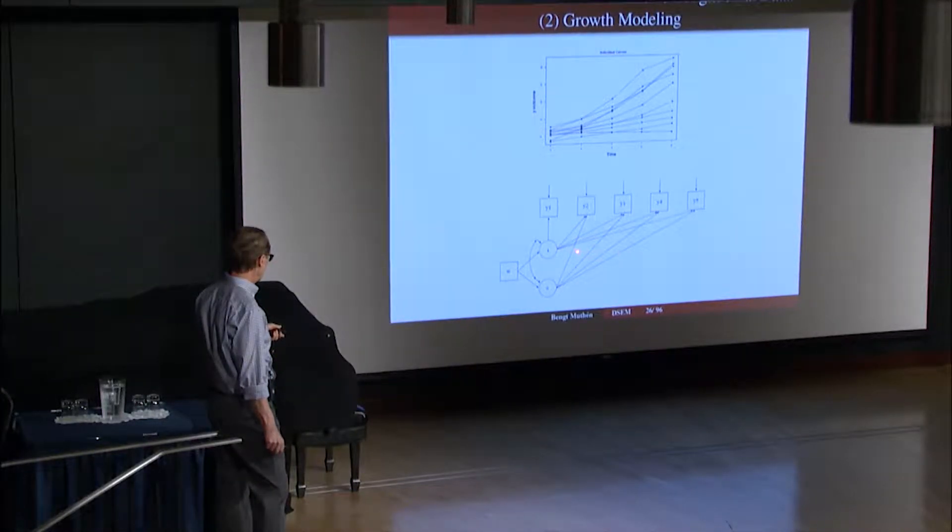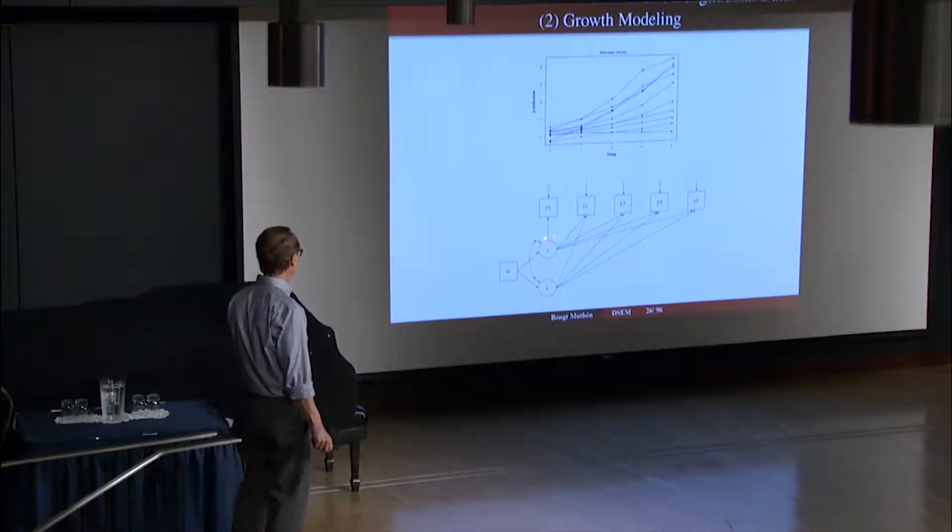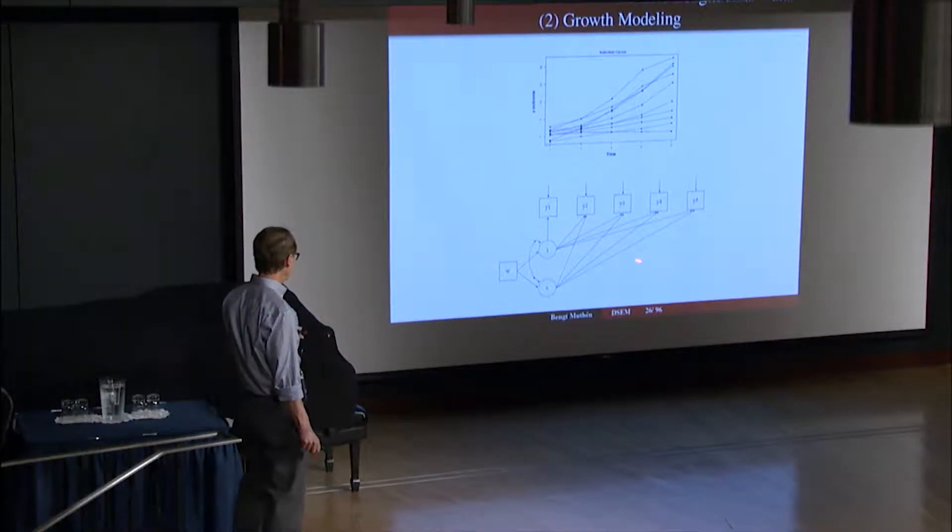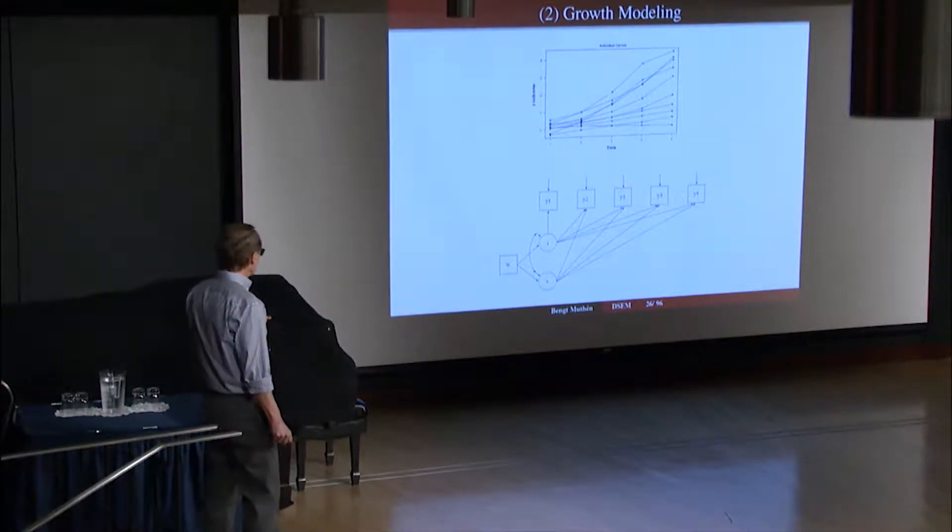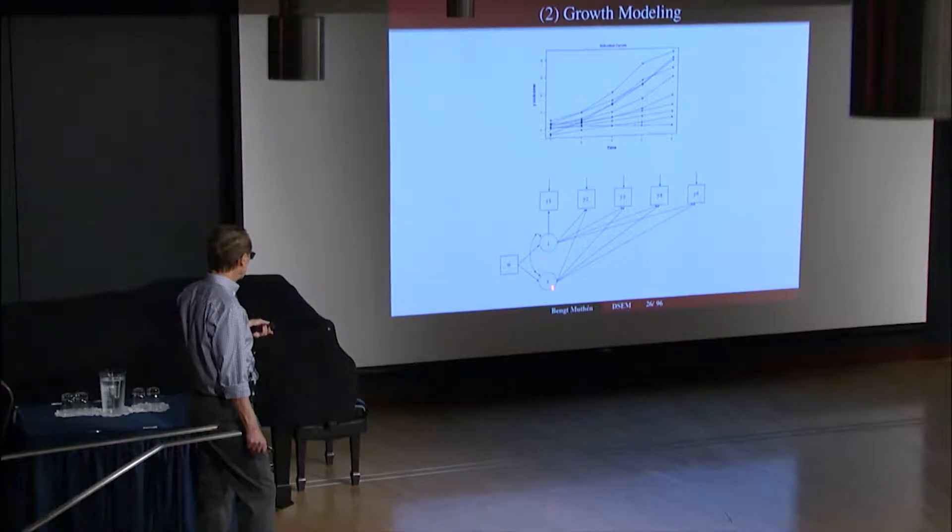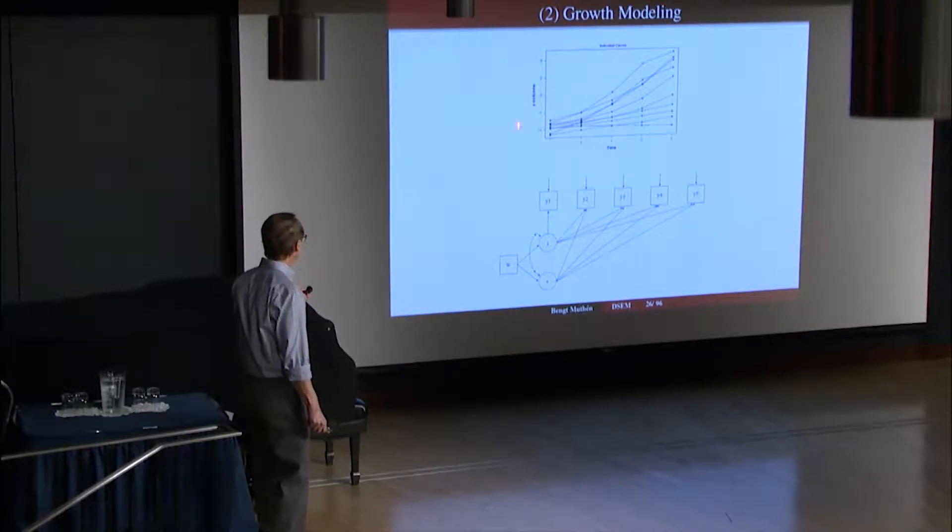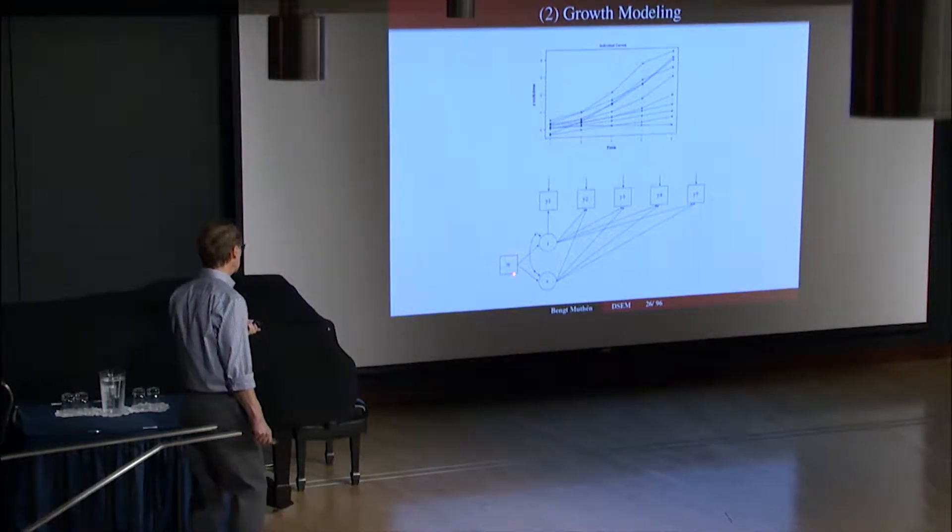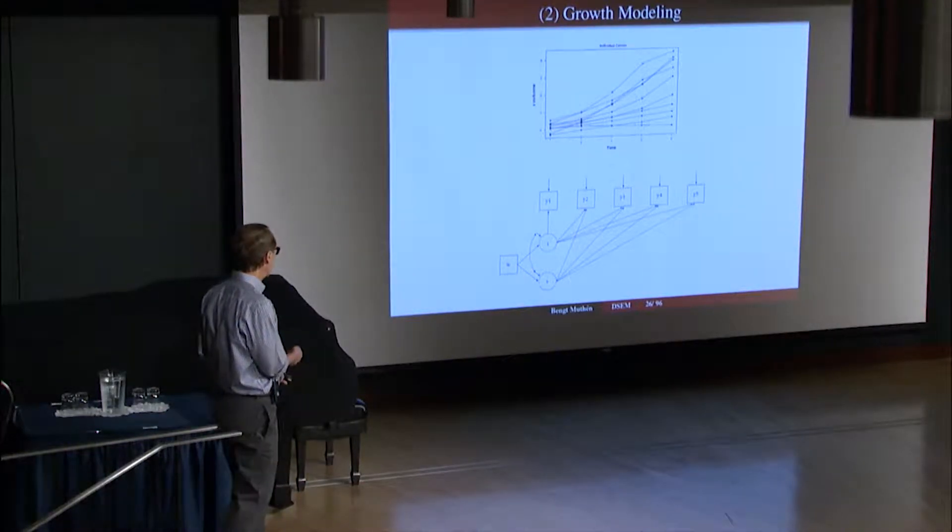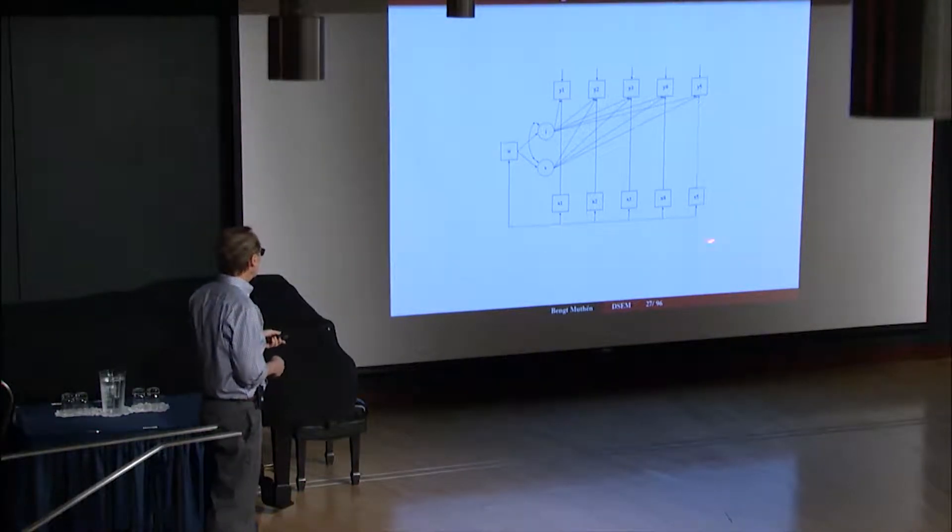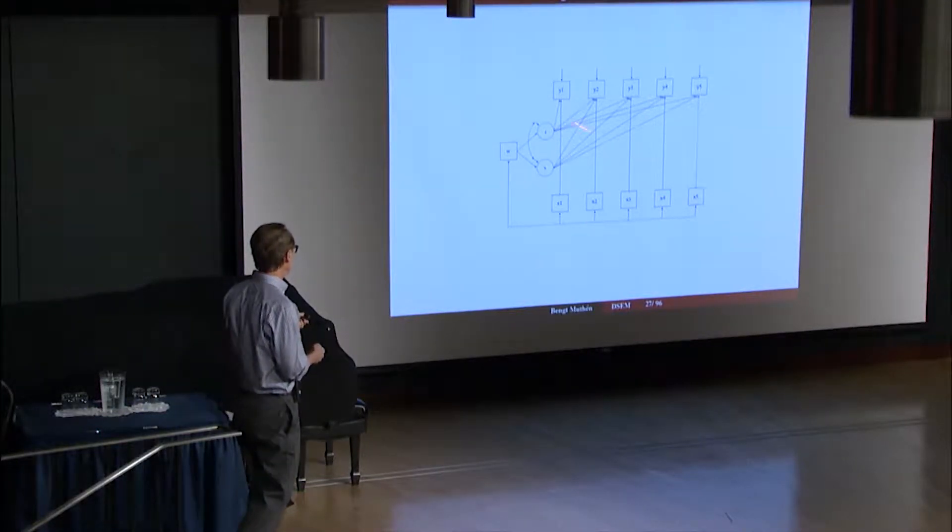This looks like a confirmatory factor analysis model, and it is. Typically you fix all of these parameters, all the loadings are fixed, but nevertheless this model often fits rather well. So you have variation across time here and variation across people here, and you can describe the variation. For instance, if this is math development, you can describe it by family SES, which tends to increase the initial value and tends to increase the slope over time. You can add time-varying covariates like this as well, something that varies across the five time points in this case.